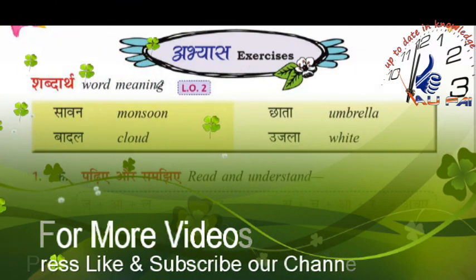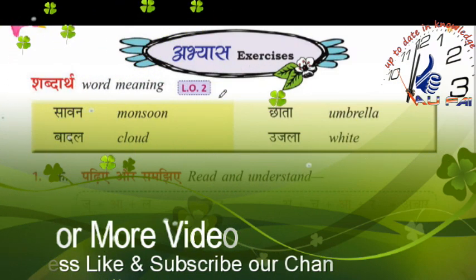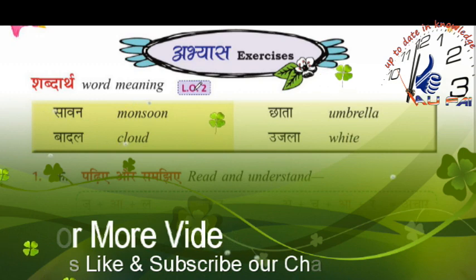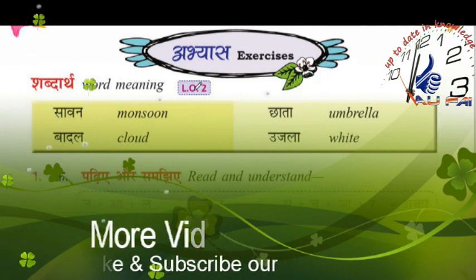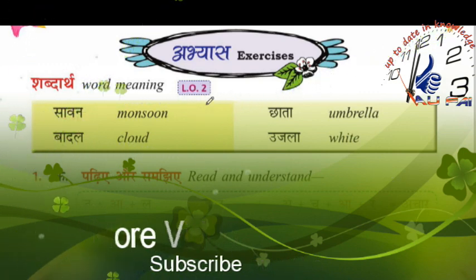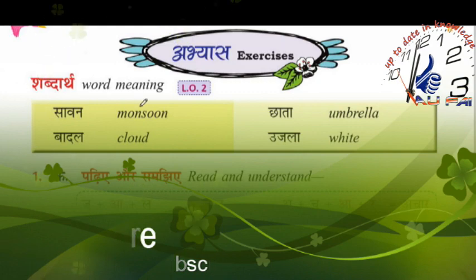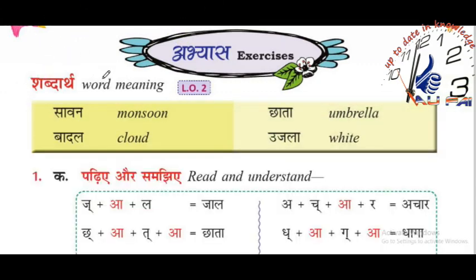The exercise learning objective is Number 2, which is collaborations. Collaboration is what you were learning earlier — you match with it. So this lesson is based on all the matra sabdos.